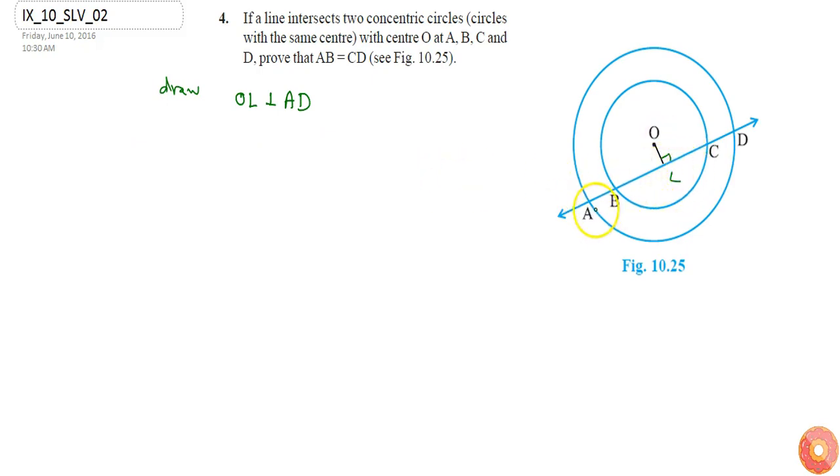Since AD is a chord of the outer circle and OL is perpendicular to the chord AD, I can say that AL will be equal to LD. Since we know that the perpendicular from the center divides the chord into equal parts, let's say this is equation number one.